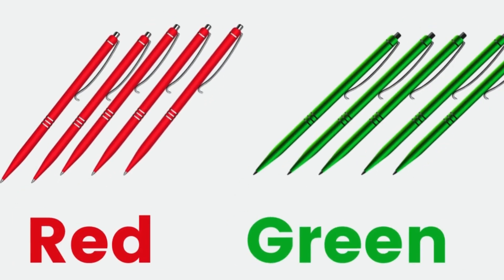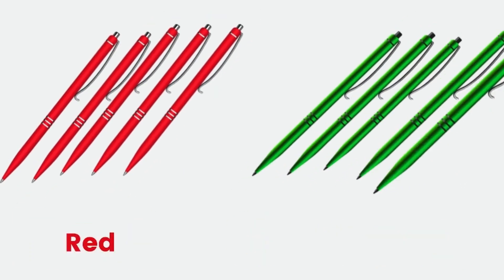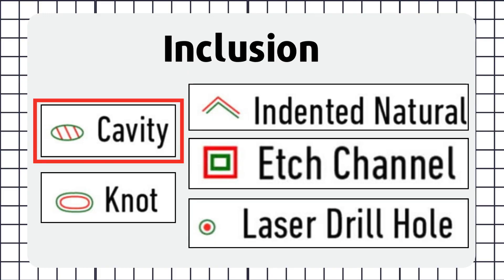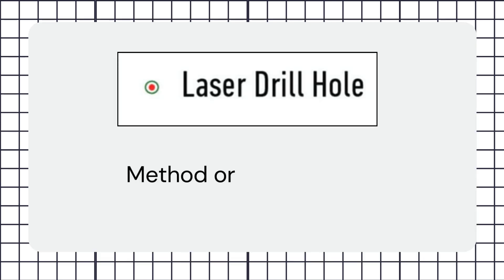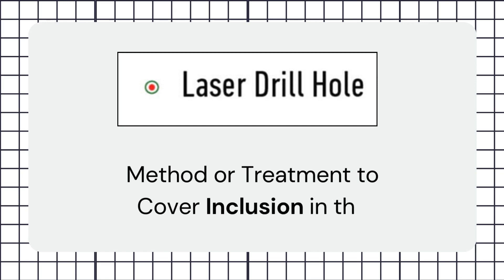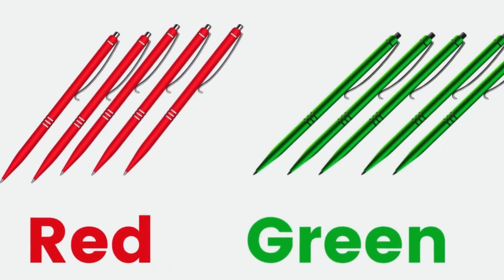Both red and green colors are used to indicate cavities, indented natural, knots, edge channels, and laser drill holes. Cavities, indented natural, knots, and edge channels are basically inclusions, whereas laser drill holes are a kind of treatment done for covering up inclusions present inside a stone. To indicate all of these, red and green color is used.